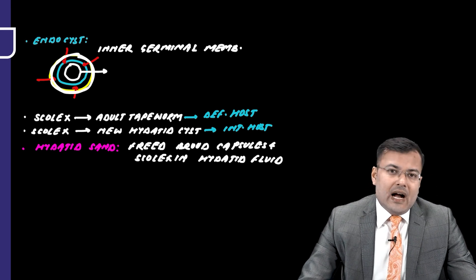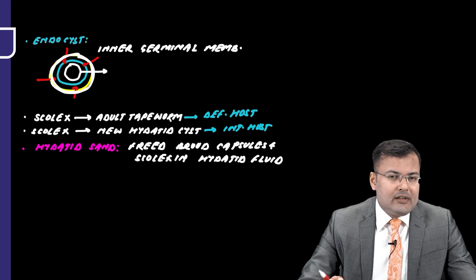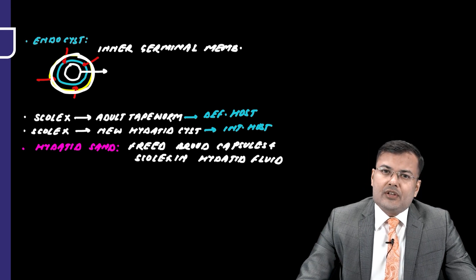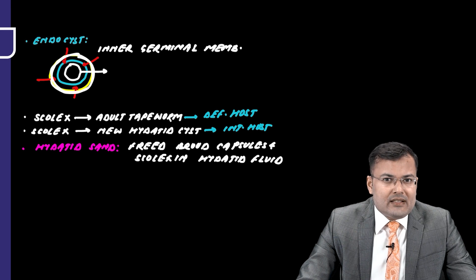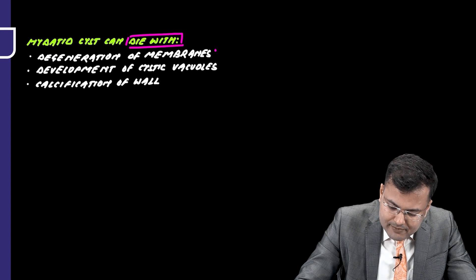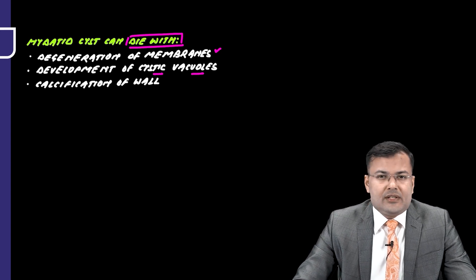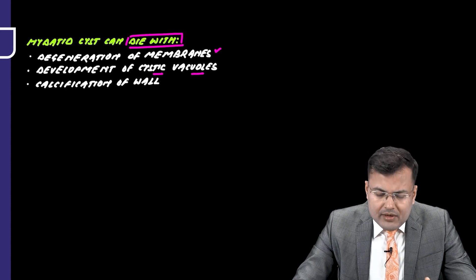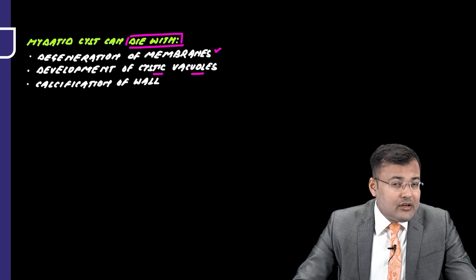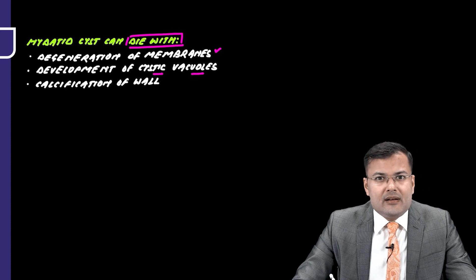A hydatid cyst can die. Indirect evidence of cyst death includes degeneration of membranes within the cyst, development of cystic vacuoles, or calcification of the wall. However, one important point: calcification of the wall does not always imply the cyst is dead — in the majority of cases it suggests death, but not always.